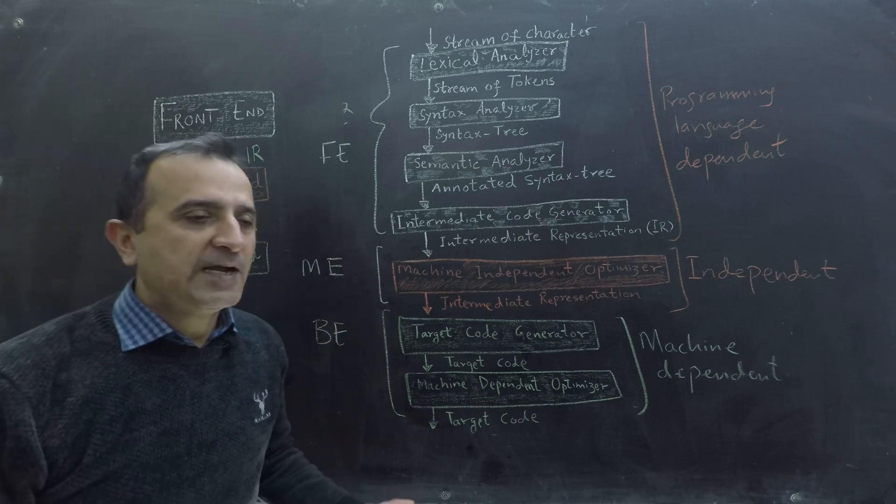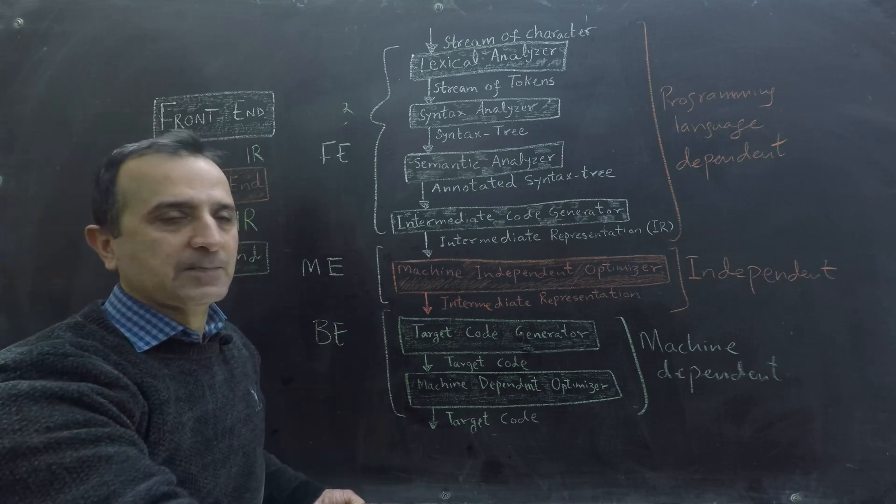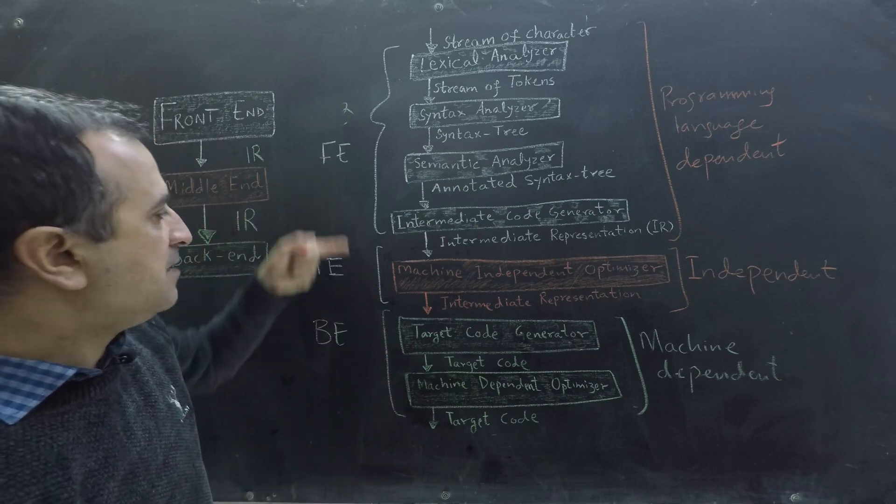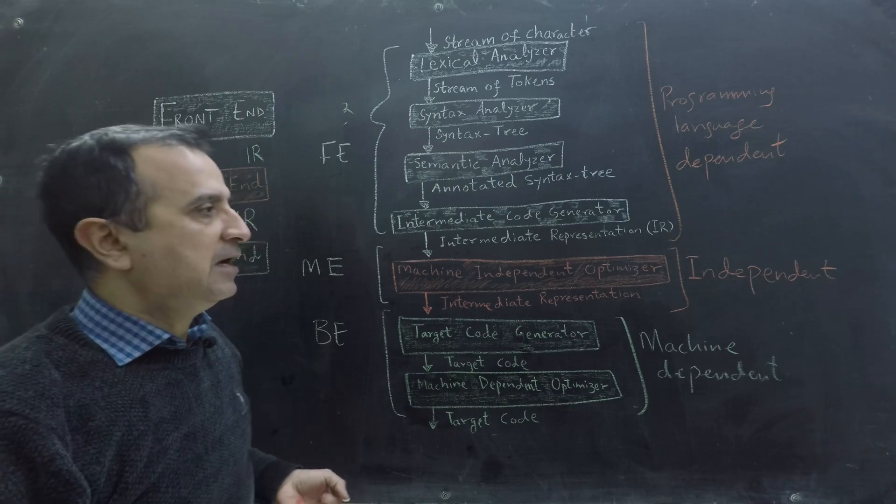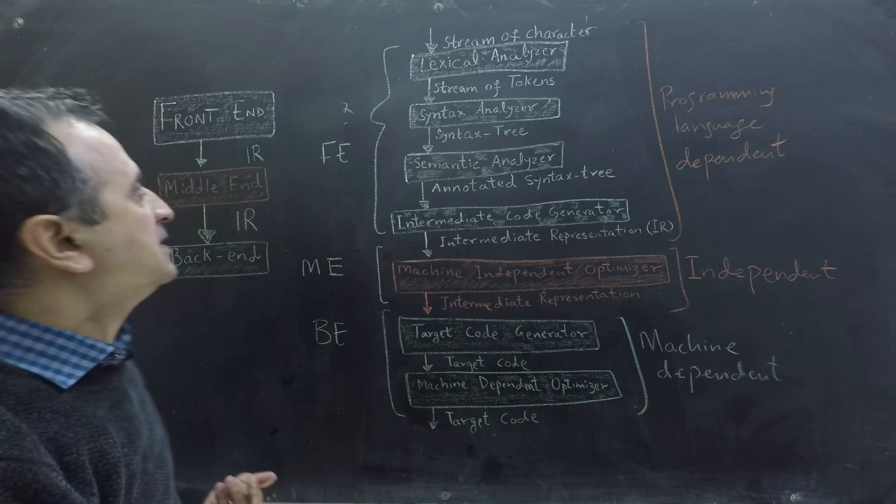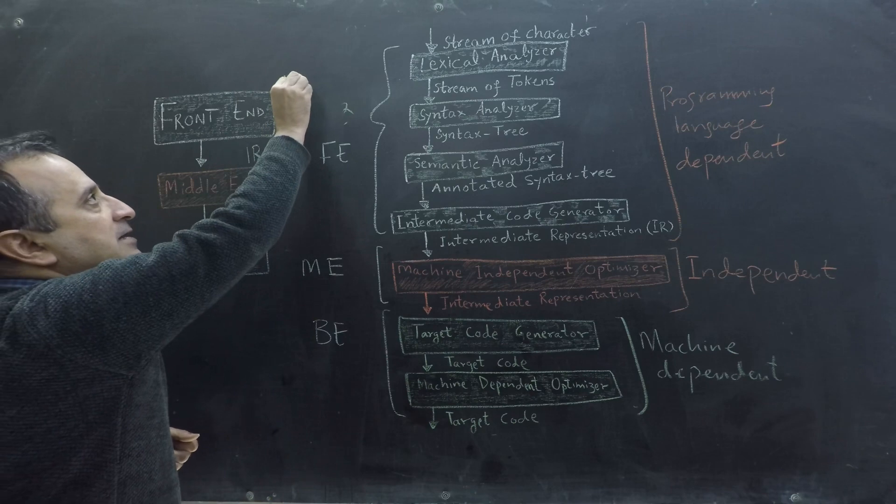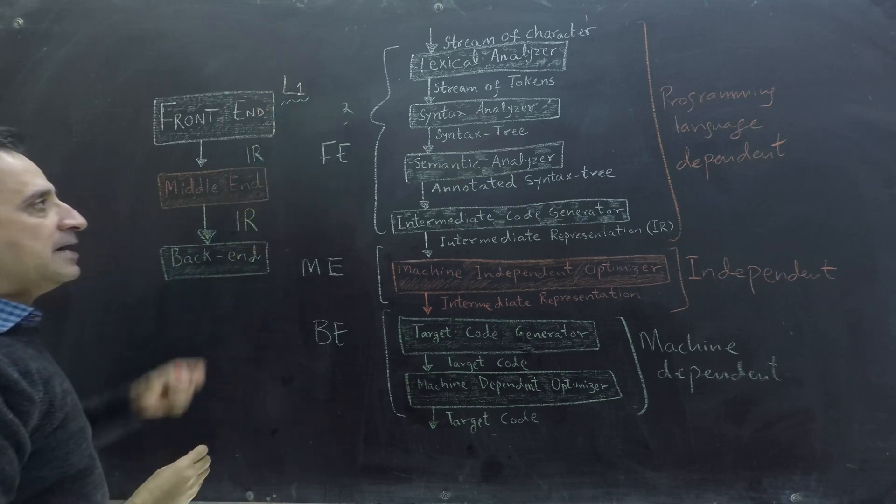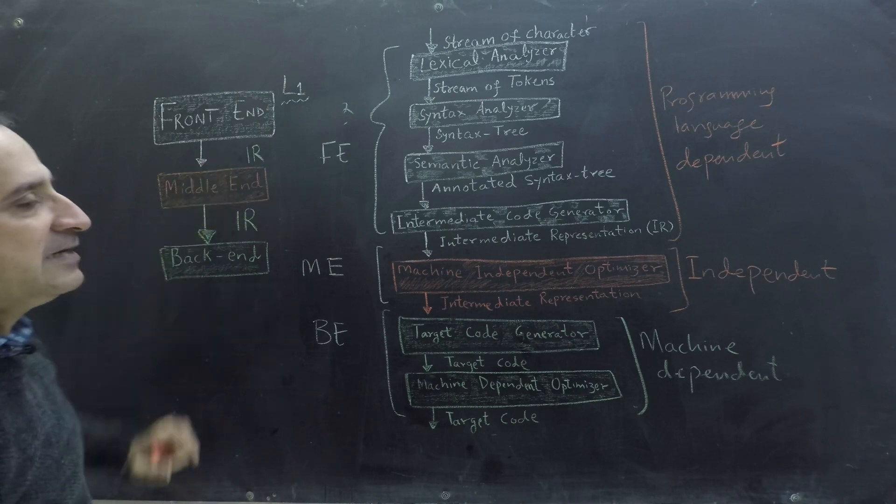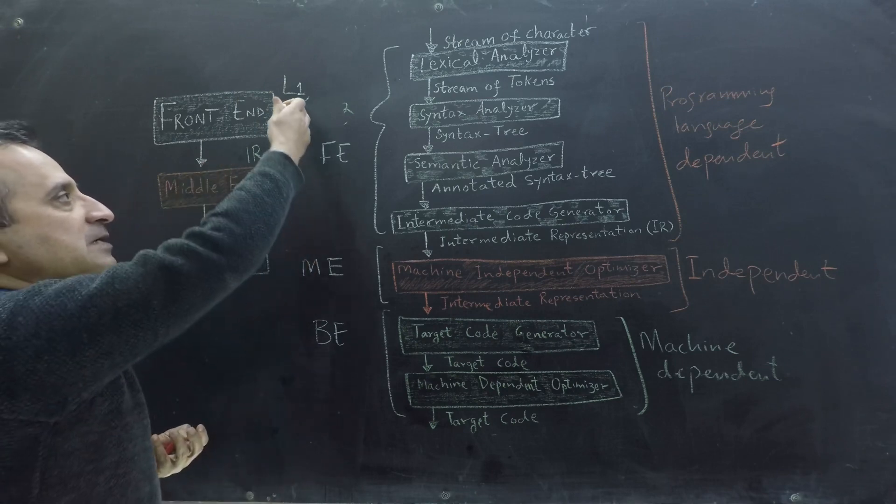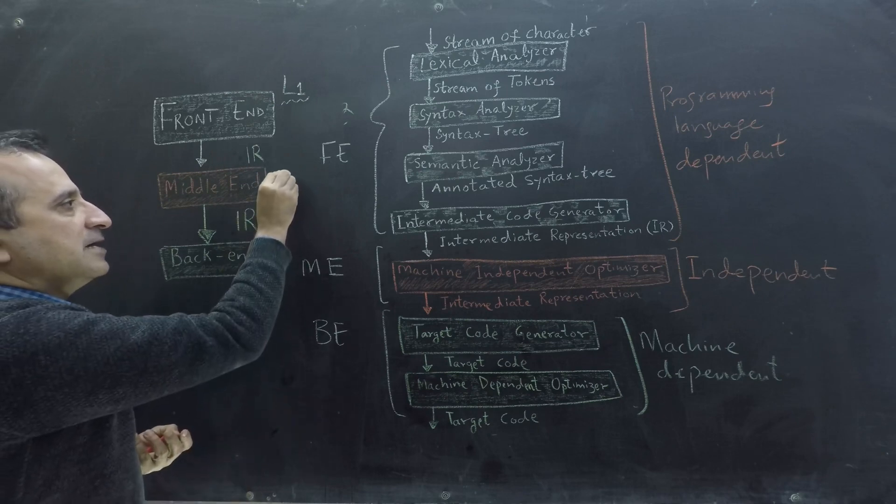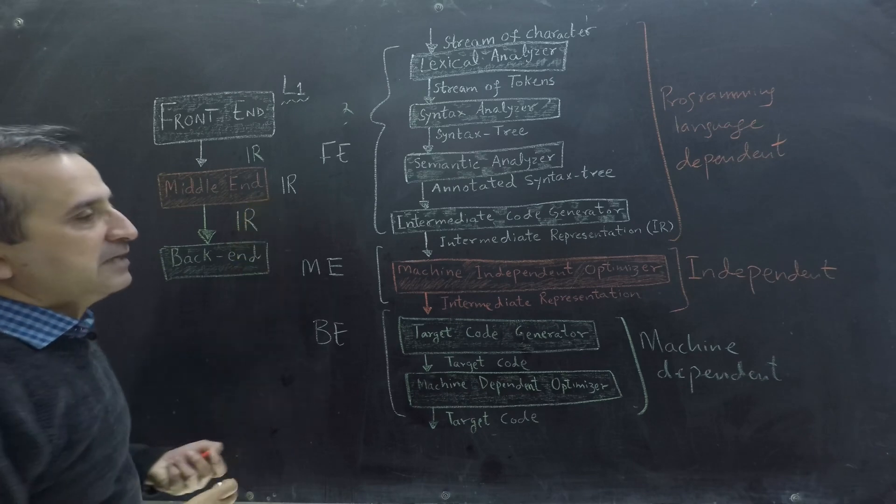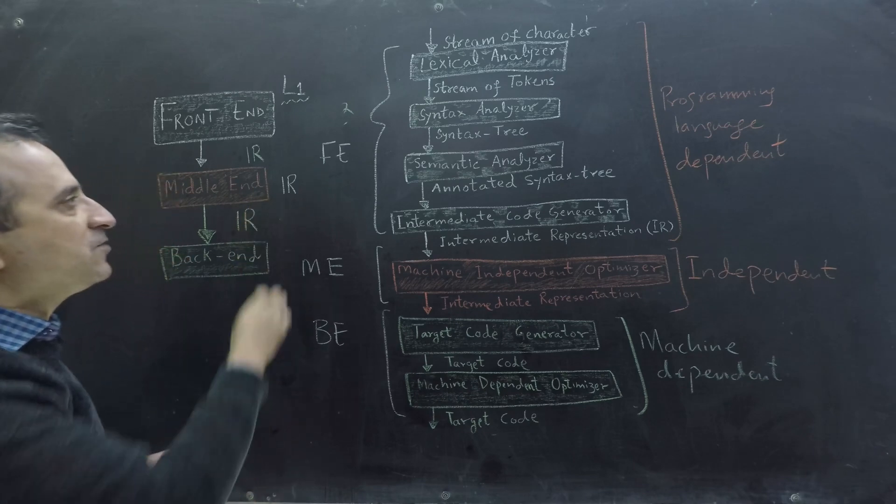Now assume that my programming language is the first programming language in the world. Then I have to write front end, middle end and back end for that language. Assume that my programming language is called L1. So I write front end of L1 and then I write intermediate representation but my intermediate representation is language independent. So I just write here I.R. It has nothing to do with L1 because it is language independent. So I don't have to write L1 here.